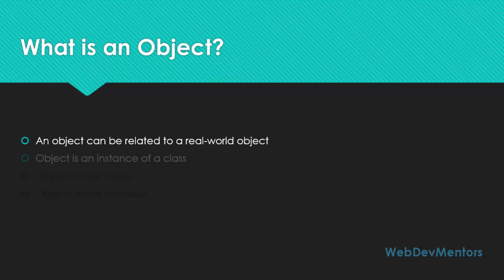An object in Java is an instance of a class. So if you take up an object-oriented programming language, an object that you are creating is an instance of the class. So anything that is available in the class will be created for the object that you create for that class.